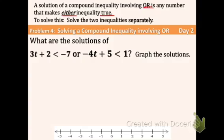The way we're going to solve an 'or' inequality is to solve the two inequalities separately. Yesterday when we were solving 'and' inequalities, we separated them and then put them back together, and we also learned how to do it together the whole time. But today they're always going to be separated — 'or' inequalities will not be combined.